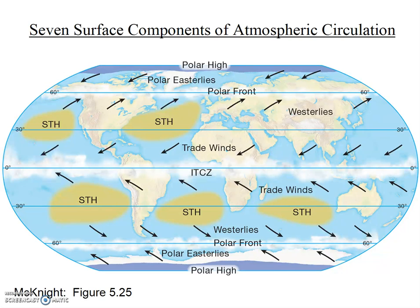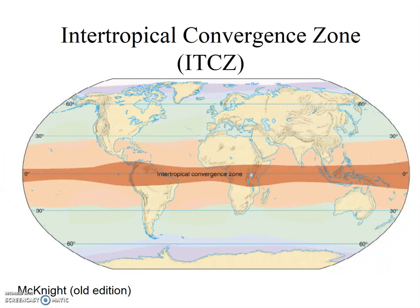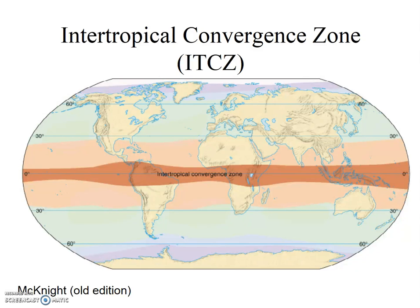We're going to go through each of these components in more detail, starting with the intertropical convergence zone. The name is very descriptive — it occurs near the equator, that's within the tropics, intertropical, and it's a region of converging air. Remember that airflow around a low pressure cell in the northern hemisphere is counterclockwise and convergent, so air is flowing towards the equator. Warm equatorial air expands and rises, thus creating a low pressure zone. So the intertropical convergence zone is a low pressure zone.